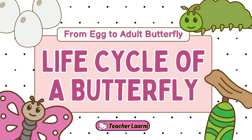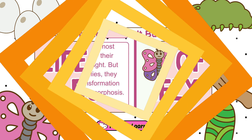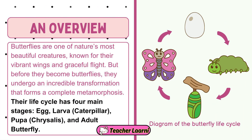Let us study the life cycle of a butterfly. Butterflies are one of nature's most beautiful creatures, known for their vibrant wings and graceful flight. But before they become butterflies, they undergo an incredible transformation that forms a complete metamorphosis. Their life cycle has four main stages: egg, larva or caterpillar, pupa or chrysalis, and adult butterfly.